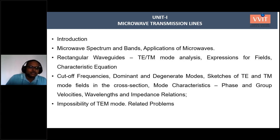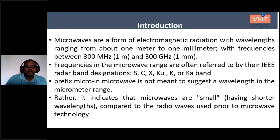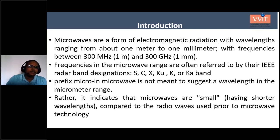The first unit consists of basic Microwave Applications, what is a Rectangular Waveguide, and different modes of analysis of Microwave Transmission Lines. Let us start our discussion with the Microwave Definition. Microwaves are basically electromagnetic radiation with wavelengths ranging from about one meter to one millimeter, with frequencies between 300 megahertz to 300 gigahertz.